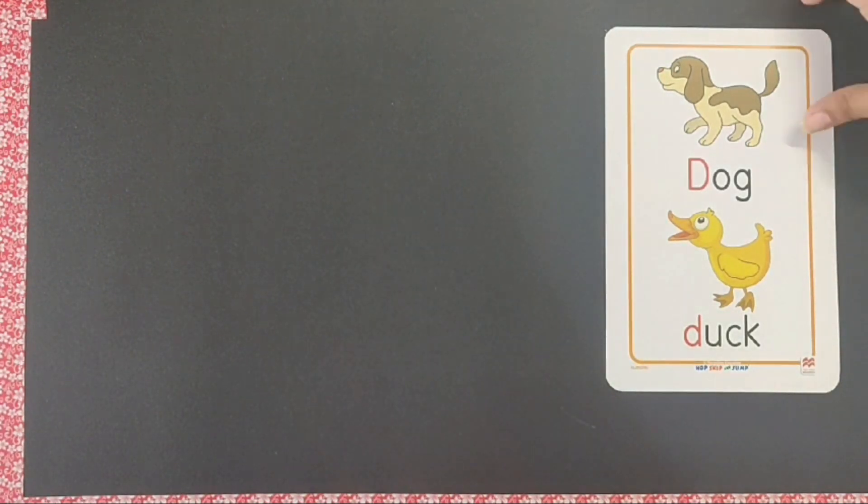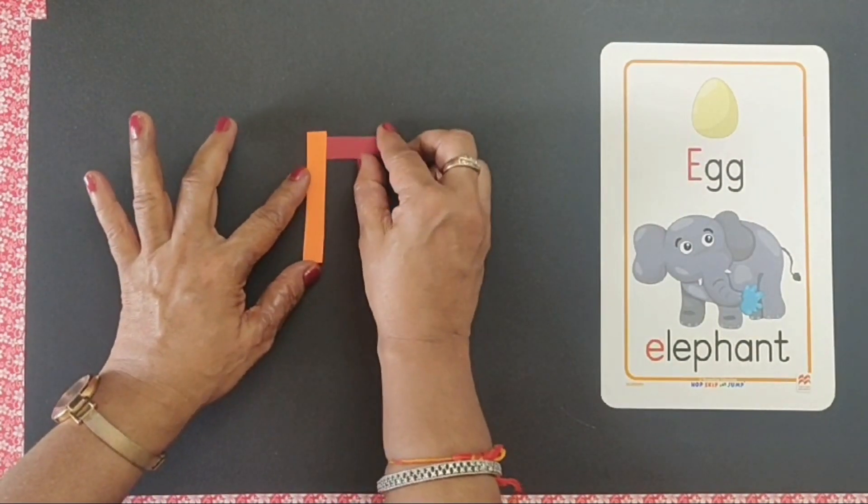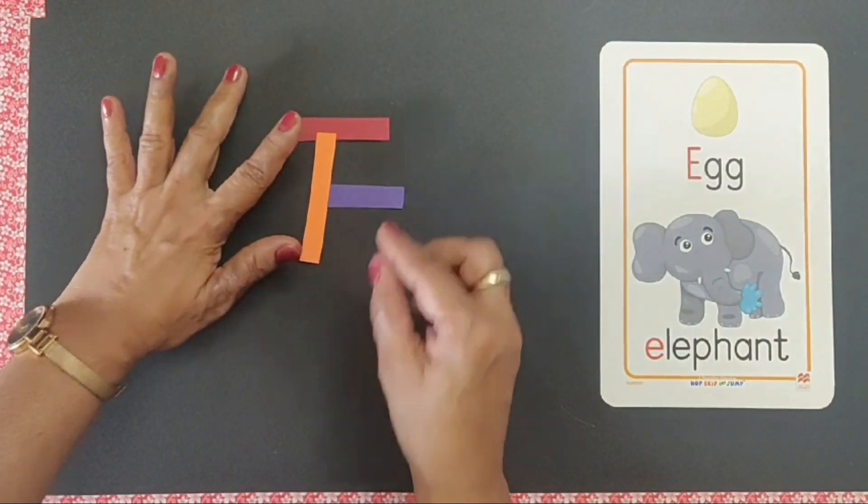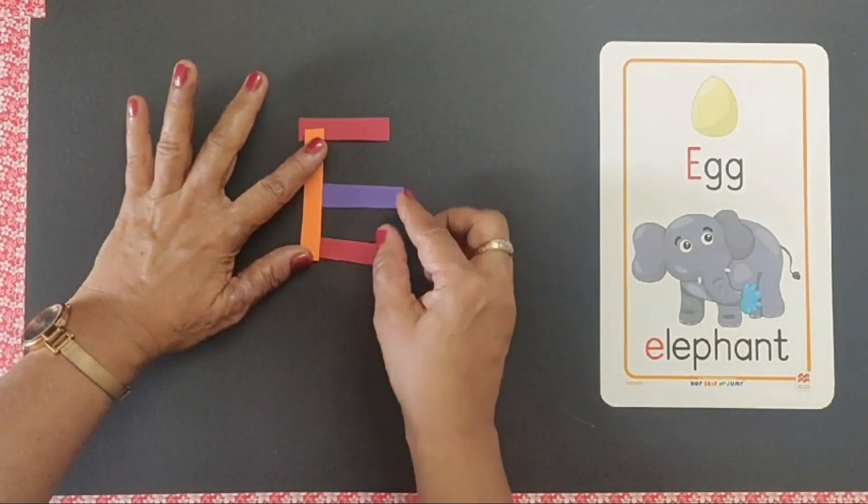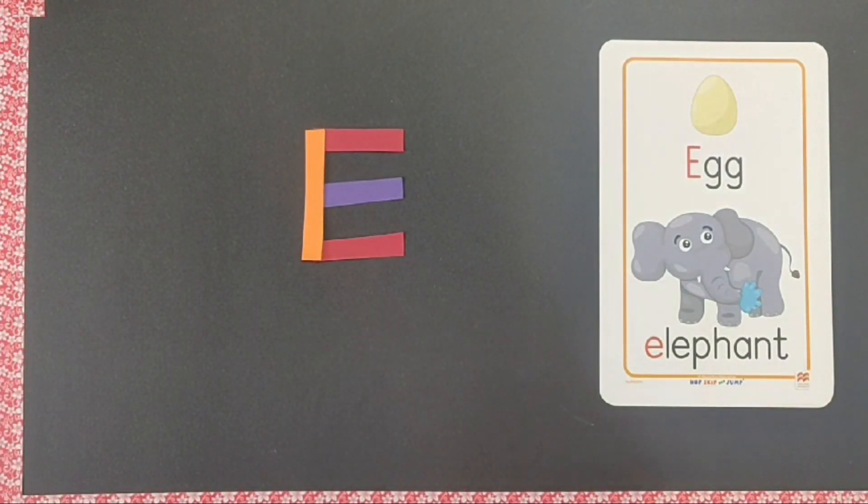Now we will be making E. A bigger strip, three smaller strips like this. So we make E. Say E says eh, E for egg.